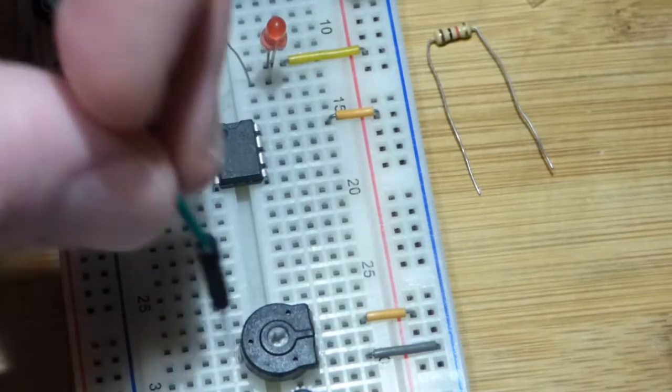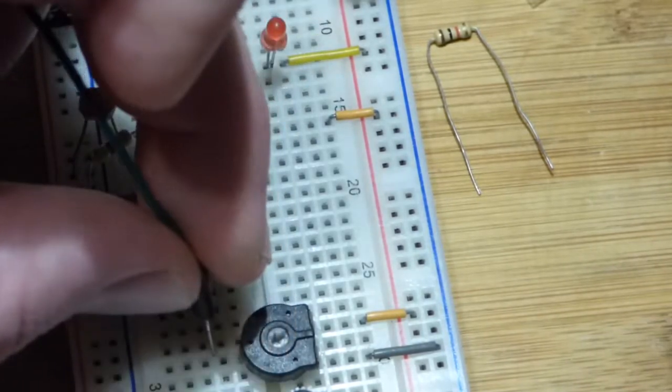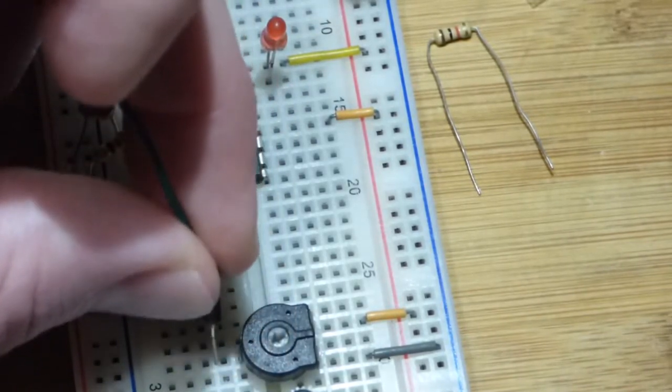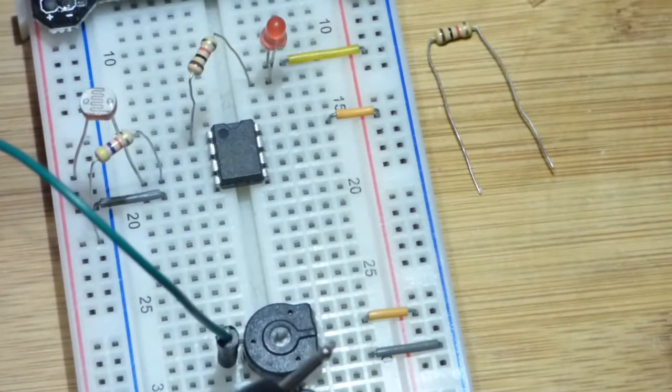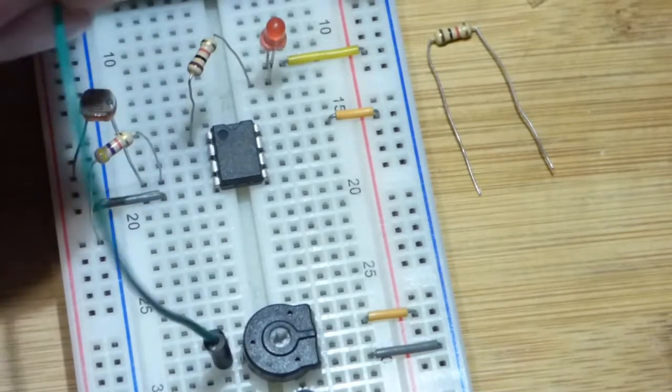This is a trim pot. We can adjust the voltage manually with this. I do that all the time, so I'm not going to go into much detail on that. I can go from zero volts to five volts at the output here.